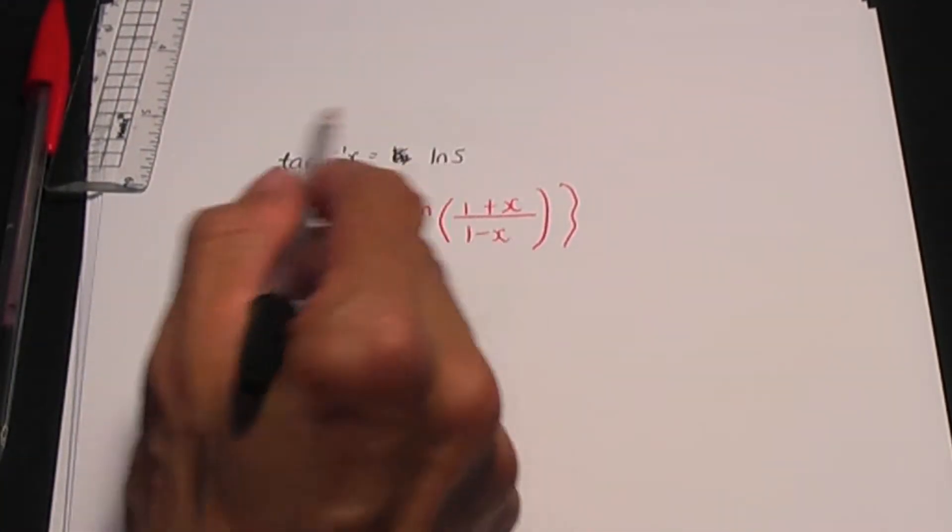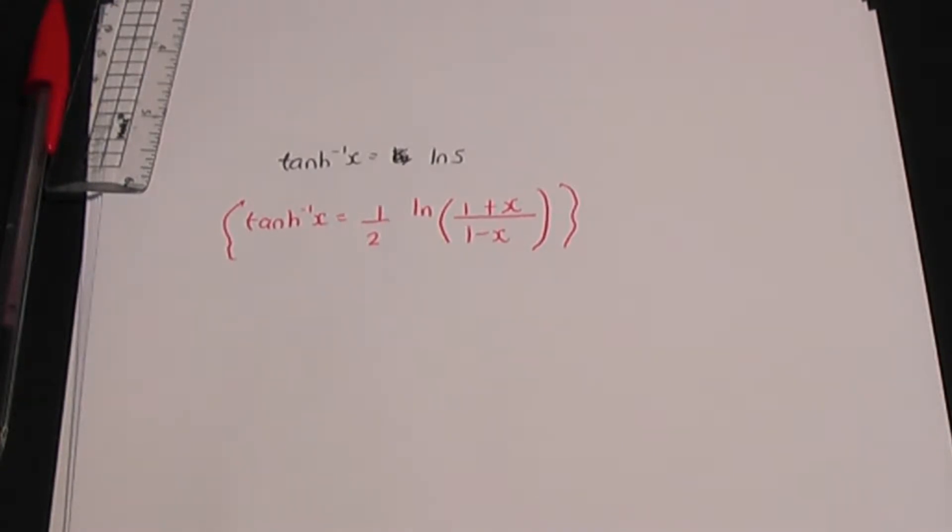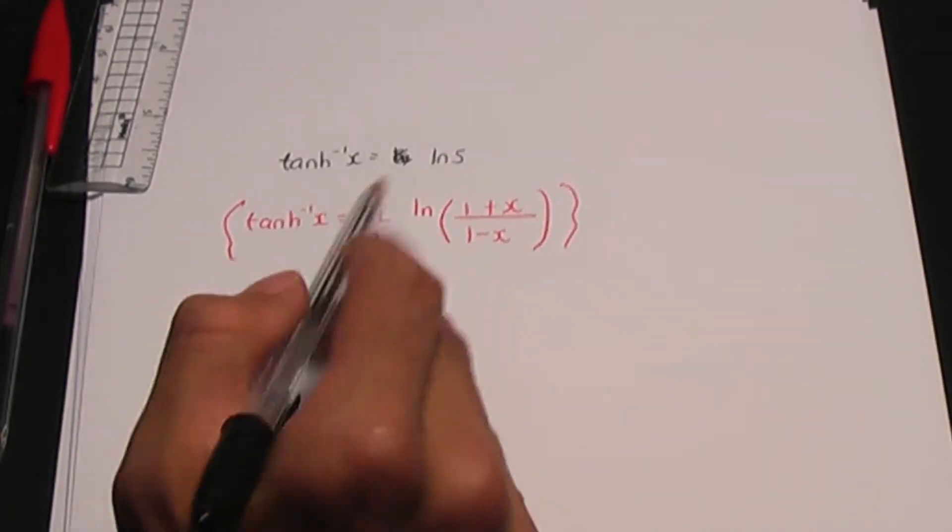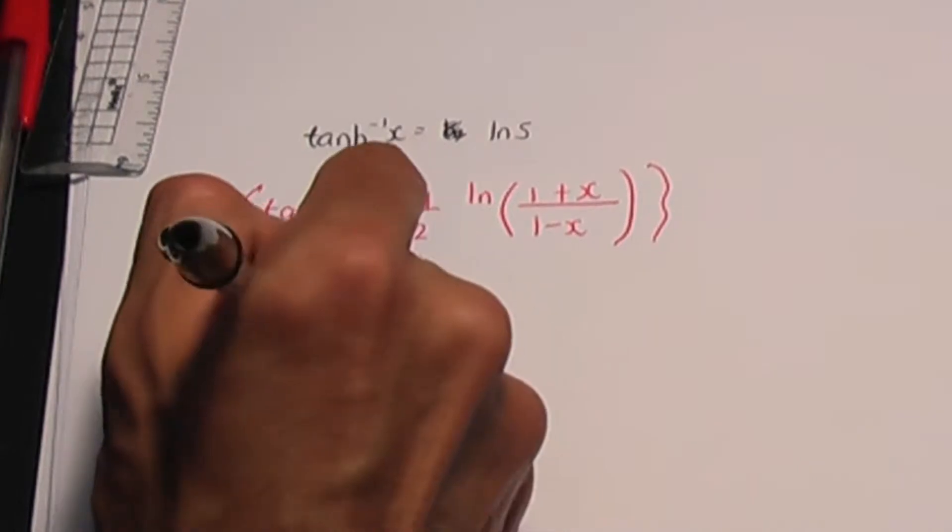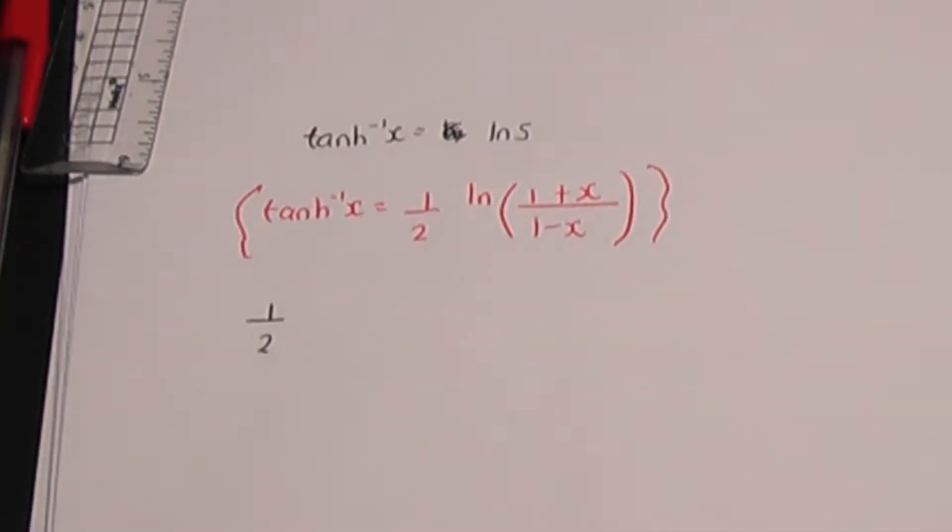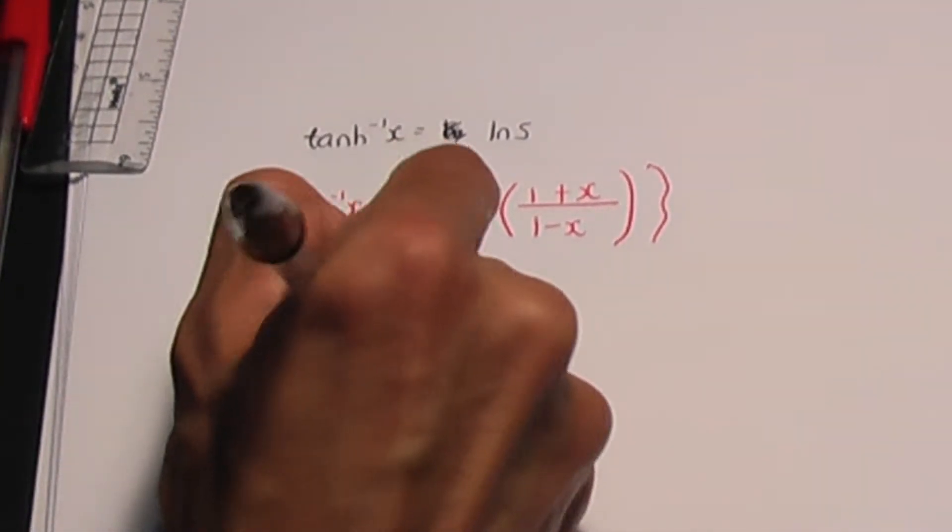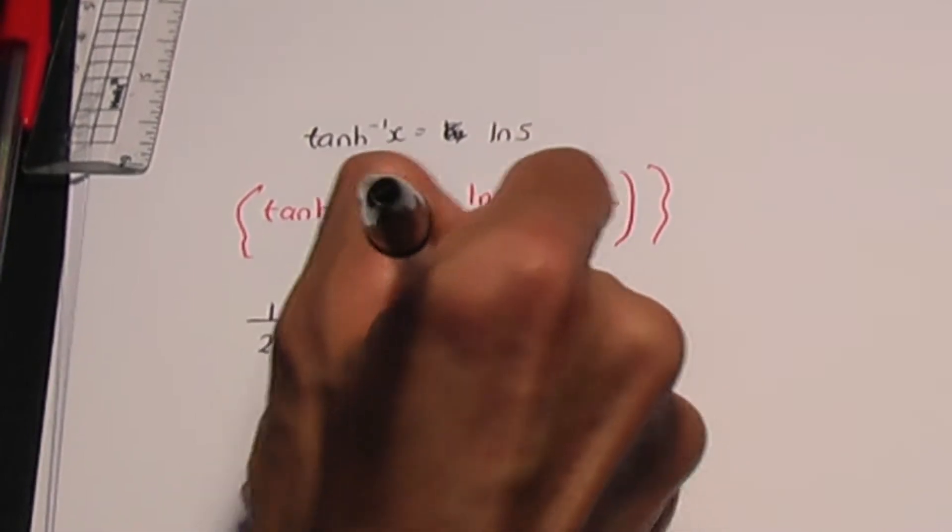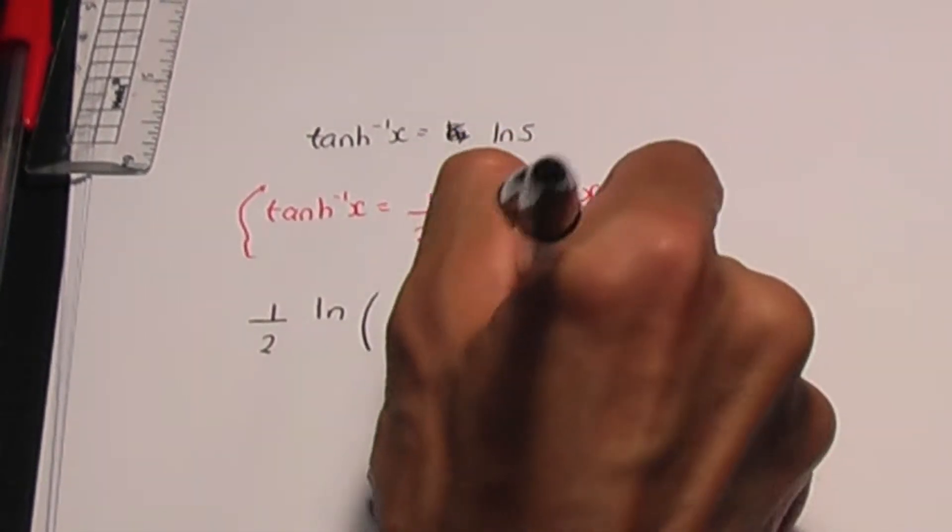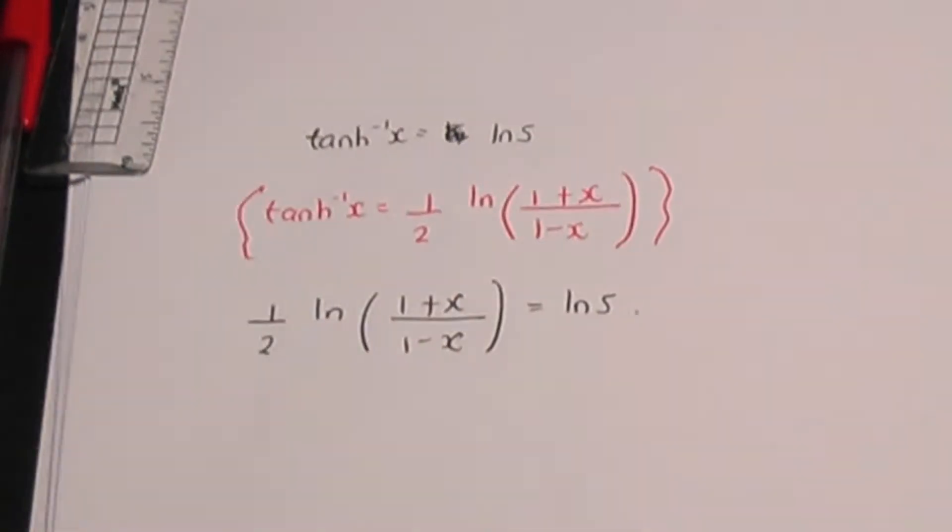So if your equation involves the inverse hyperbolic tan, use the definition to help you. So if I use this definition, I'll have half ln of 1 plus x over 1 minus x on the left, that is equal to ln 5 on the right.